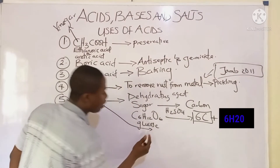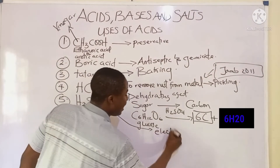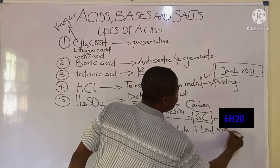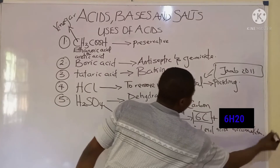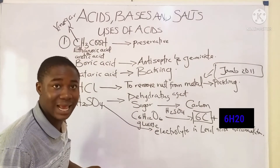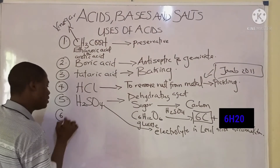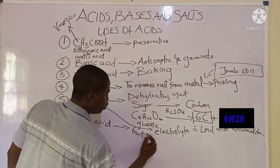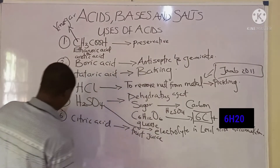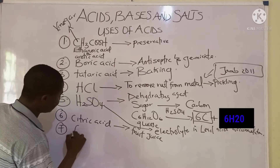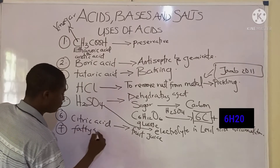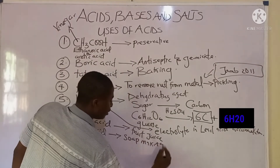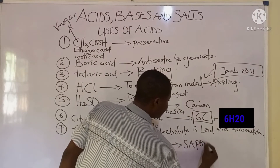H₂SO₄ can also be used as an electrolyte in the lead-acid accumulator. Talking about citric acid — it is used for making fruit juice. Fatty acids are used for soap making through a process called saponification.